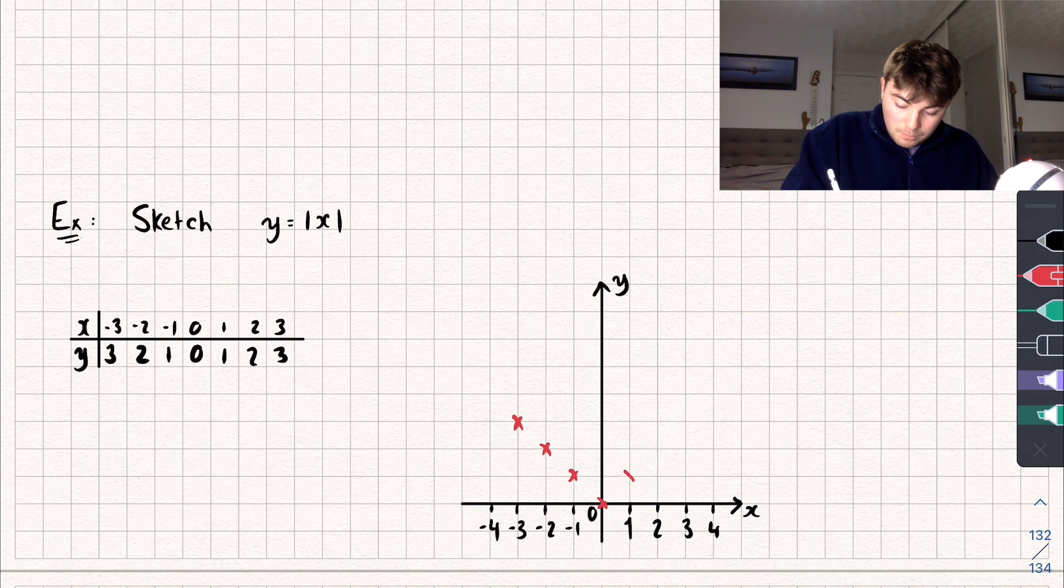So if I plot all these points on, we get something that's going to look like this. It's going to be a straight line kind of in a V shape.